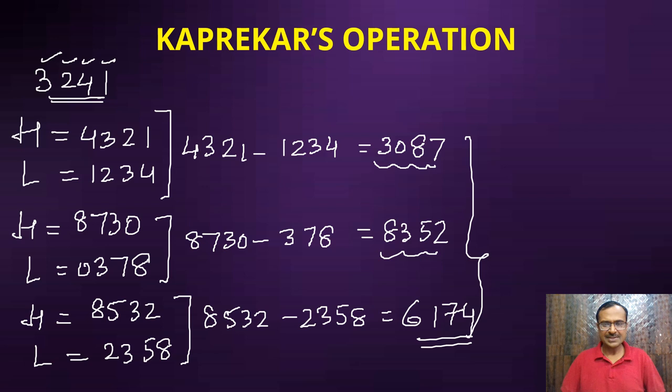There are amazing things in mathematics which are still hidden and which we still need to dig into. If you know there are 8991 four-digit numbers in which the digits are not the same, these many four-digit numbers. Then he even gave us the number of steps required for getting to this 6174 and how many numbers follow this sequence - that is the frequency.